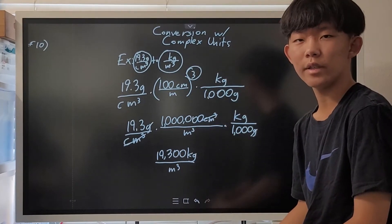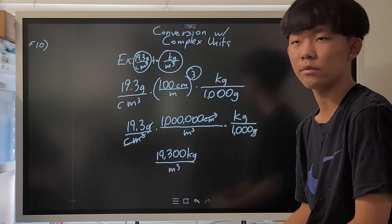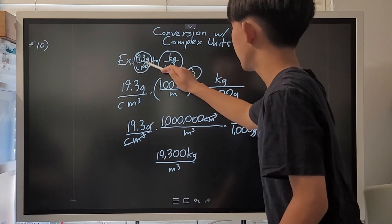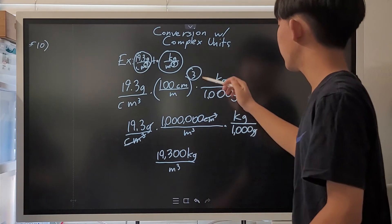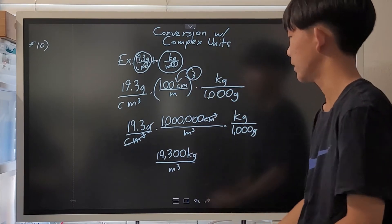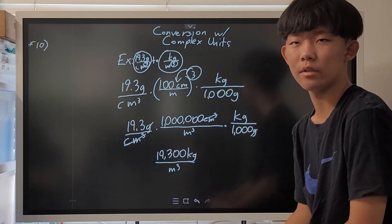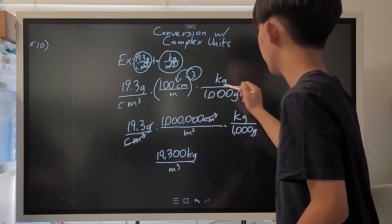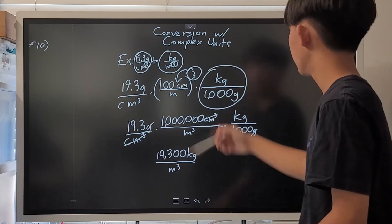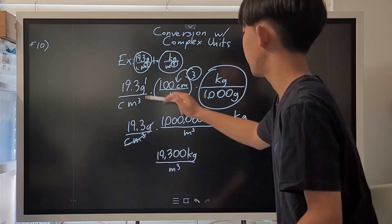But the annoying thing is, we can't multiply the conversion factor from centimeters to meters just once, because the centimeter and meters both have an exponent. Thankfully though, we can apply an exponent to the conversion factor itself as well. That way, we can cancel out the centimeter cubed and get meter cubed. And to convert grams to kilograms, we just need to put the kilogram-gram conversion factor just once, since grams are raised to the power of 1.